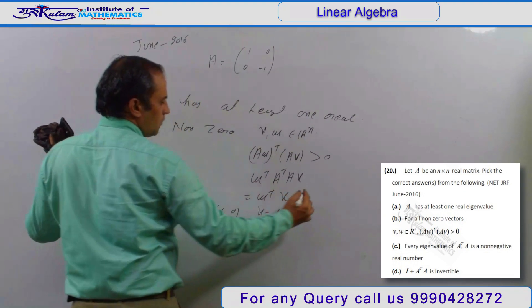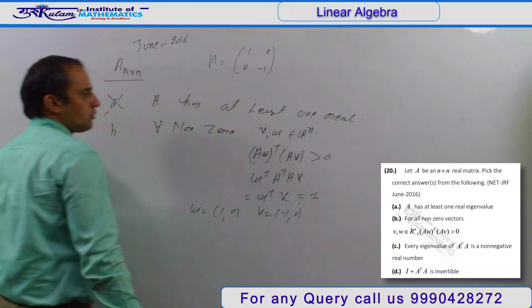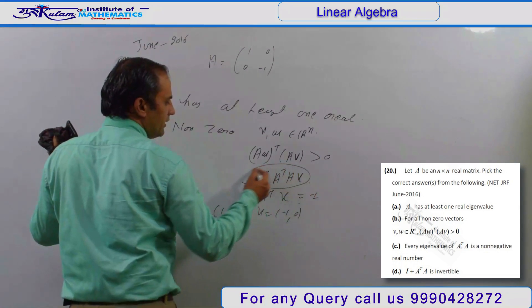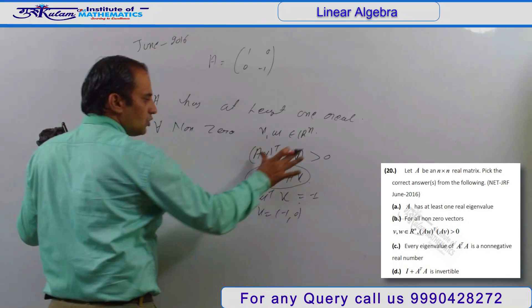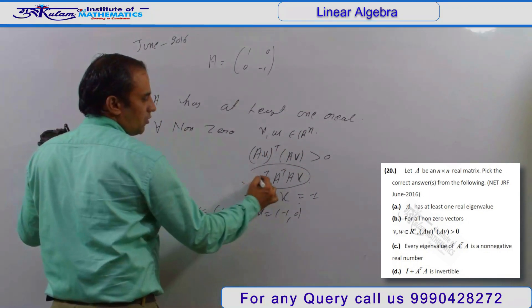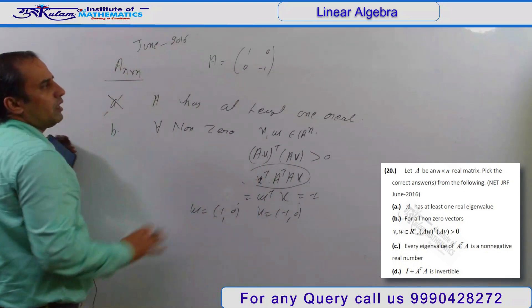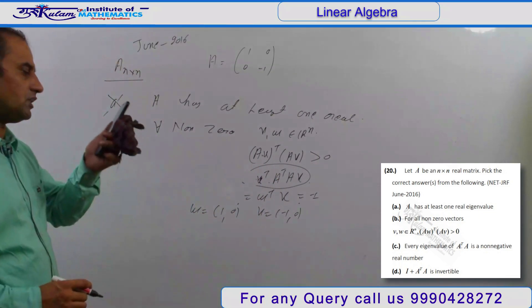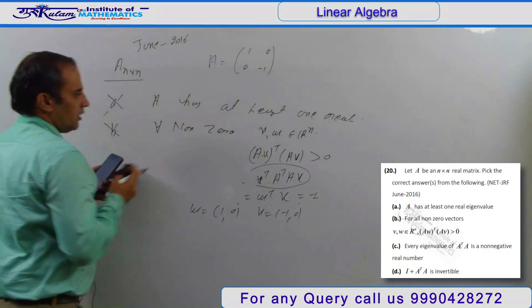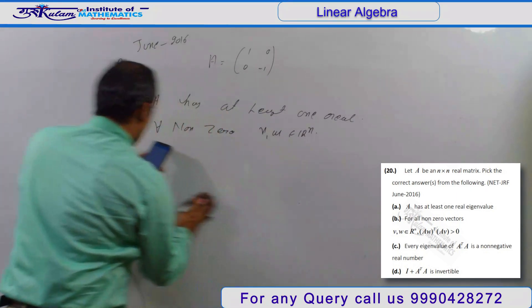So this maps to a negative number. Basically, this is a bilinear form. If in this question they give you the same vector, it becomes a quadratic form, which always maps to a non-negative element. So your second option is also false.